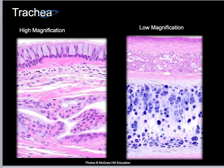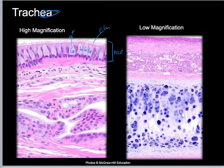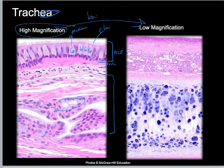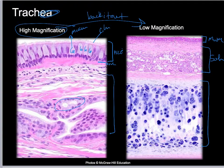Now we're going to look at the trachea bigger. Here you can see really nicely the PCCE — you see the cilia. Here I've got goblet cells that are going to be secreting mucus onto the surface. The areolar connective tissue proper is so thin you can't really see it very well, but that's where it's going to be. And then I've got my submucosa where I can see mucus glands. This is at high magnification — we're going to back it out so you can see more of it. Here you've got the mucosa, this is the submucosa, and then here you can see the hyaline cartilage. So you're going to go into APR and practice that.